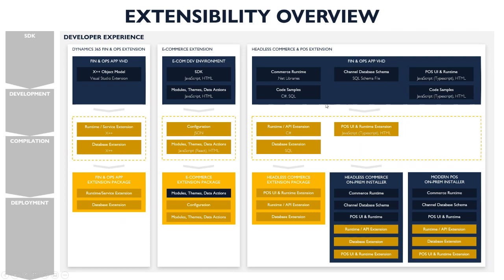There are two ways to get the SDK. One is through the VHD, which you can download from LCS (Lifecycle Service), or you can provision a developer VM using the Lifecycle Service portal. Recently we also started publishing the SDK on GitHub, so you can download it from there and start customizing. The overall flow is: take the SDK, do your development and compilation, and then deploy. All these components can be deployed to different topologies — cloud-hosted or self-hosted — and for MPOS and offline you can include the same extension.